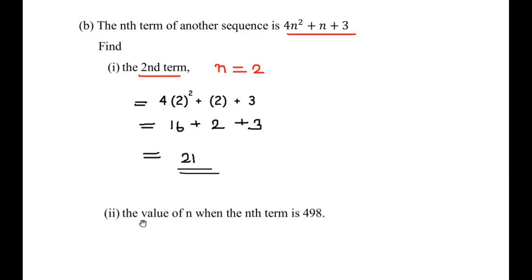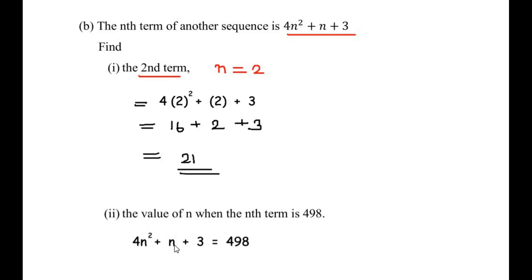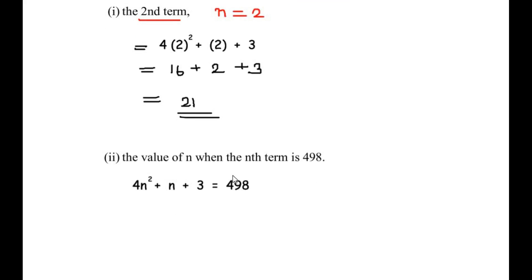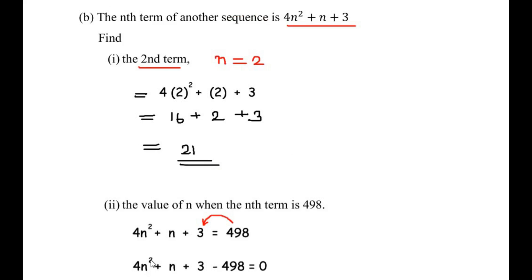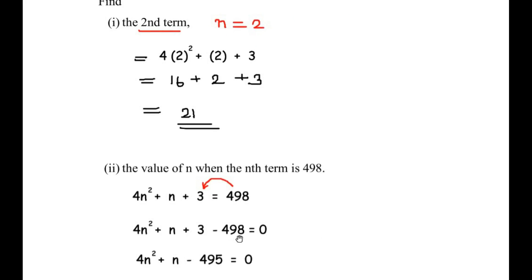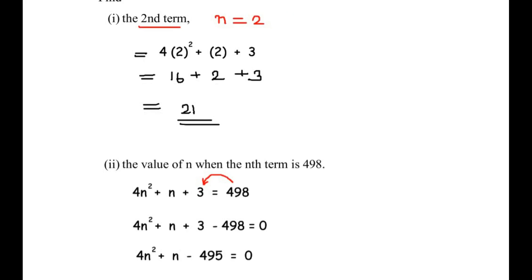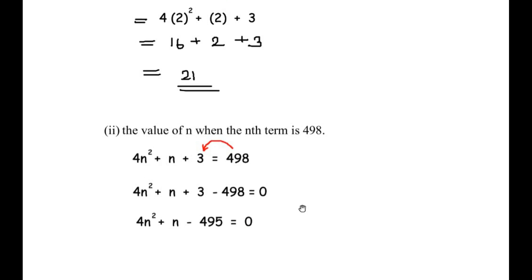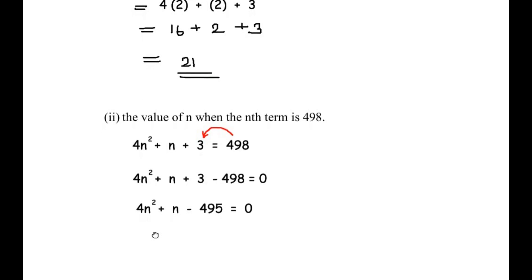The last question asks us to find the value of n when the nth term equals 498. We set the expression equal to 498: 4n² + n + 3 = 498. Rearranging by moving 498 to the left side gives 4n² + n + 3 − 498 = 0, which simplifies to 4n² + n − 495 = 0.